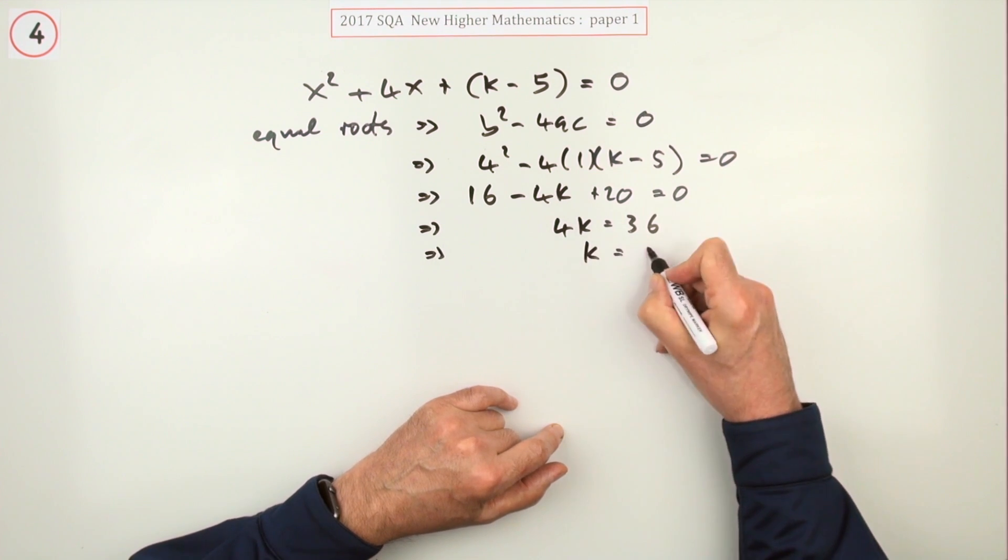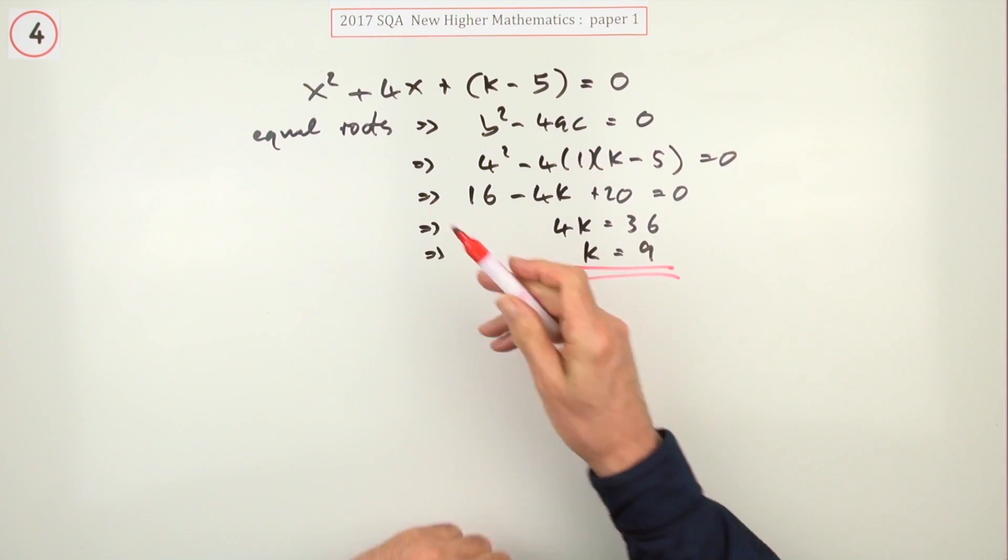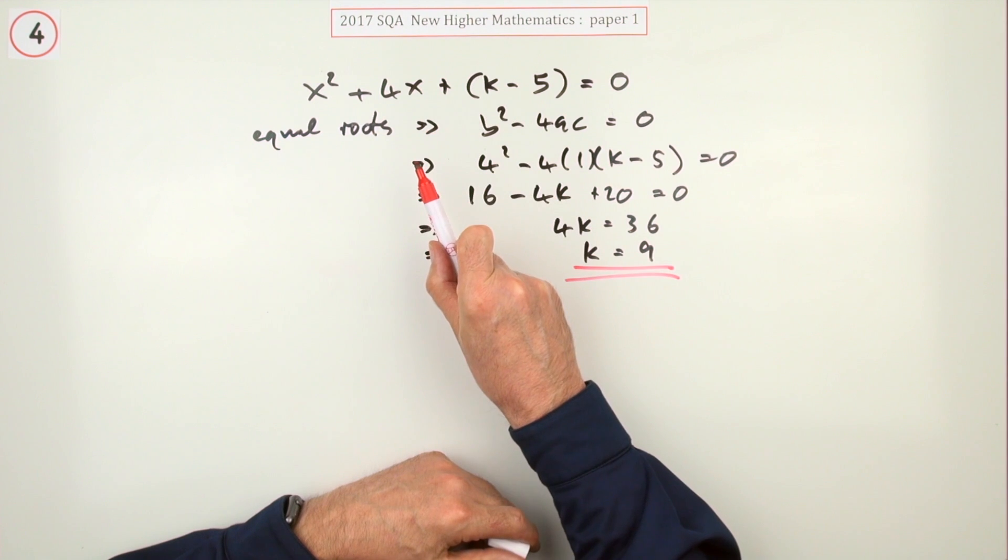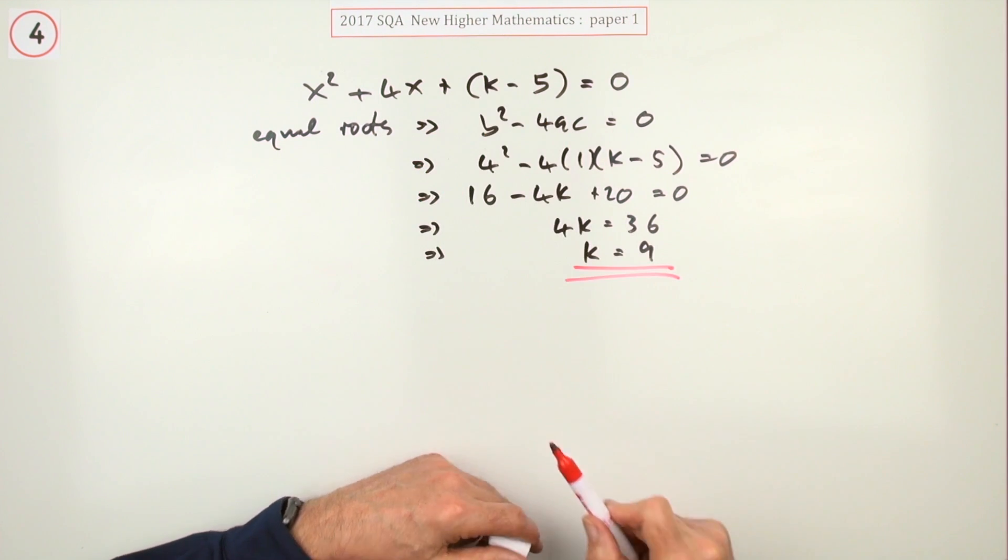So k should equal 9, and that's right because you'd want that to be a four at the end. So if k was 9, that part would come to four.